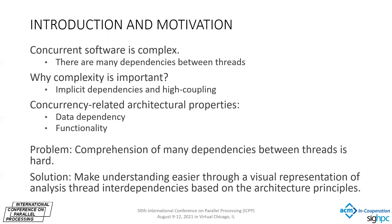The problem we are trying to solve is that comprehension of the dependencies between threads is hard because in its raw form there are many dependencies between the threads — for example hundreds and thousands — and visualizing all of this in its raw form does not help, because it is not always possible to understand the important effects of these dependencies that are propagated into software and influence other properties. Therefore, the solution we suggest is to use visual representation combined with the concept of abstraction from software architecture.